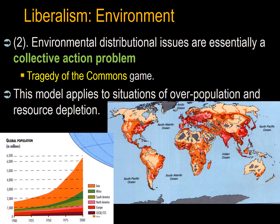Liberalism 2. Environmental distributional issues are essentially a collective action problem that is well simulated by the tragedy of the commons game. Essentially, there exists a long-term solution for distributing a scarce resource, but in the absence of successful collective action, individual actors will exploit other actors through unsustainable exploitation of the resource, making the resource ultimately unavailable. This model applies to situations of, for example, overpopulation or resource depletion.